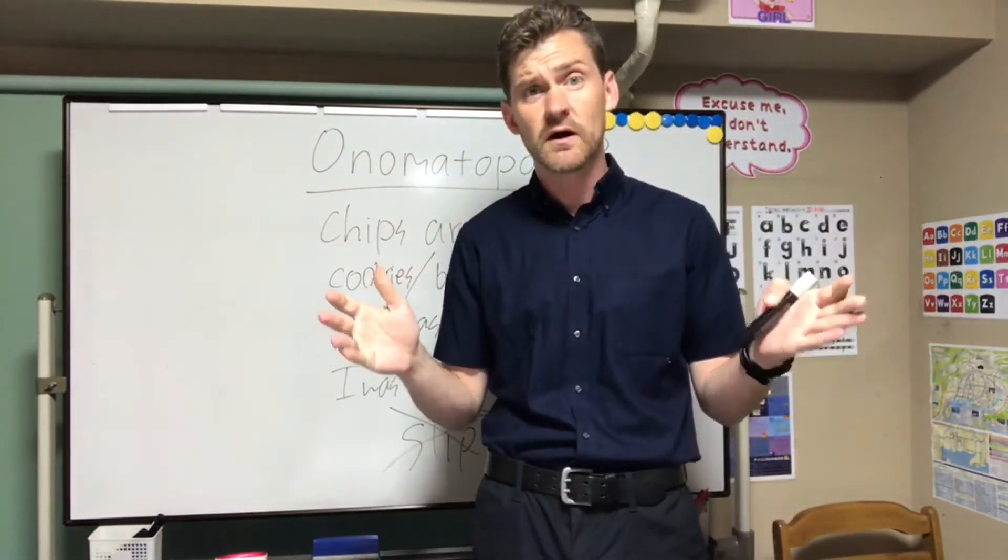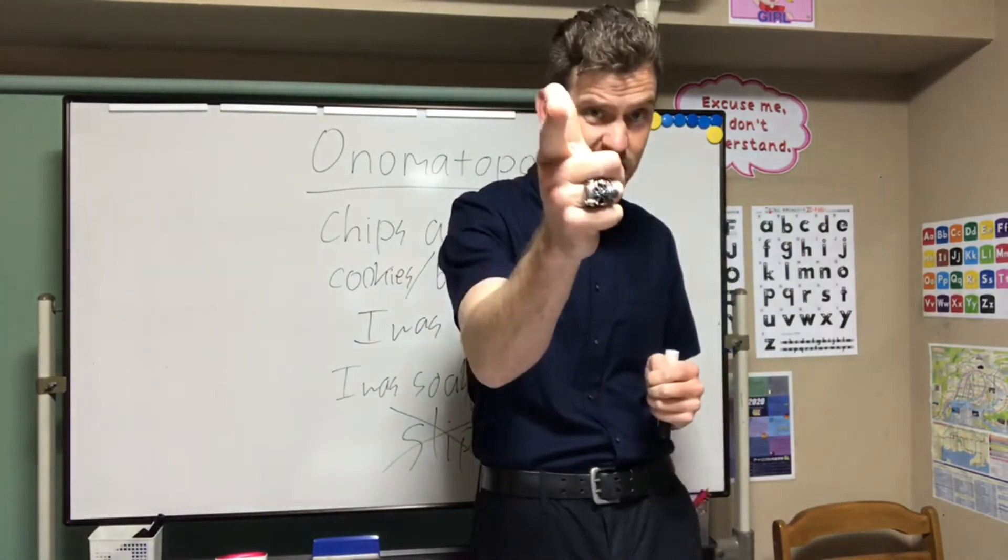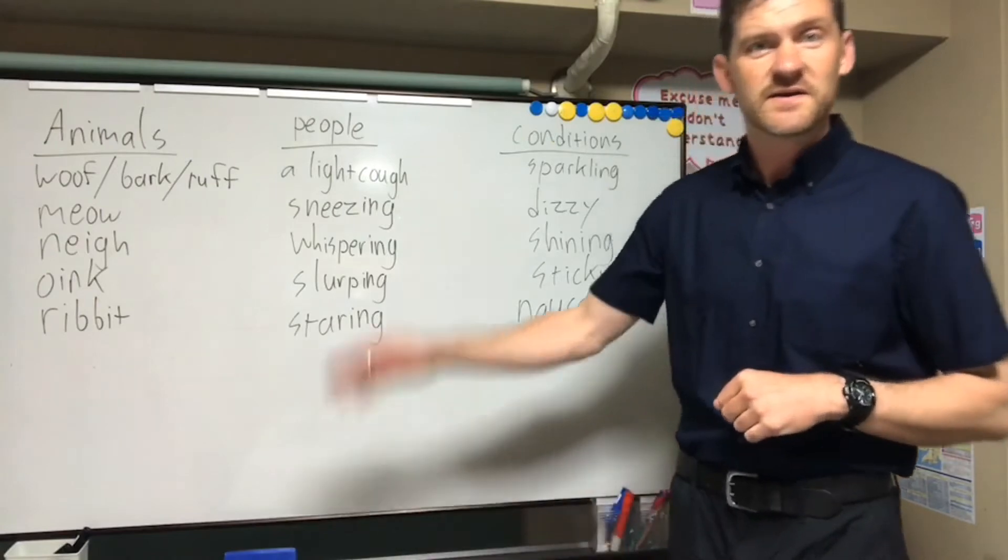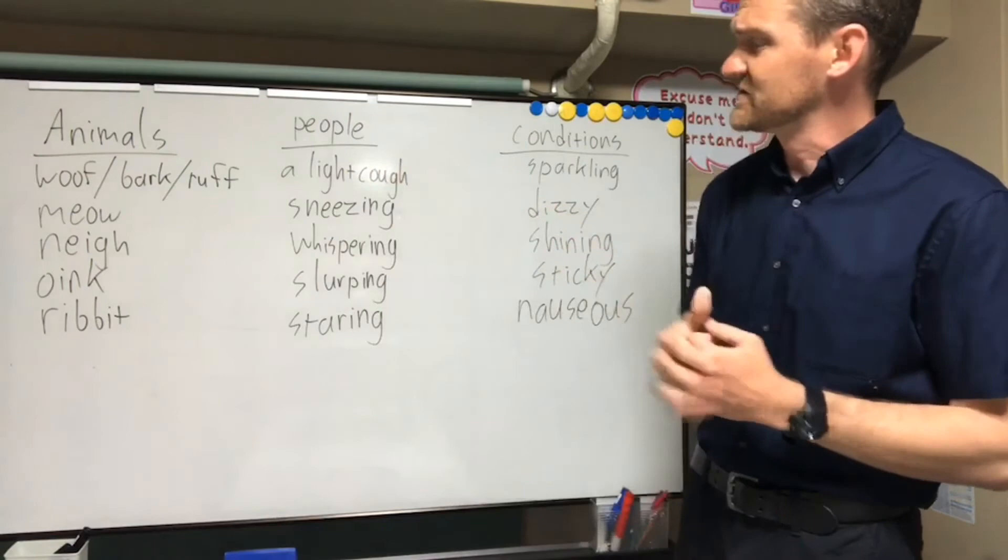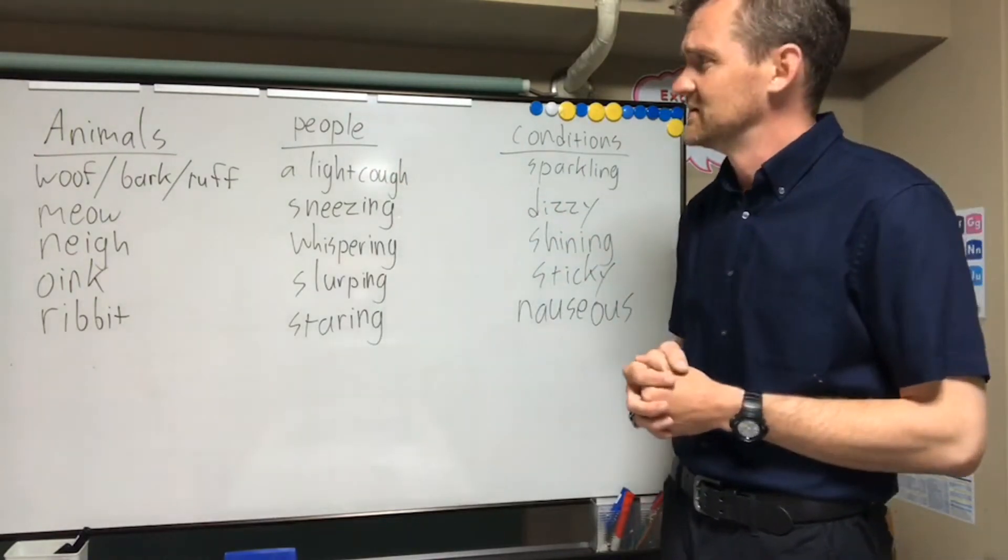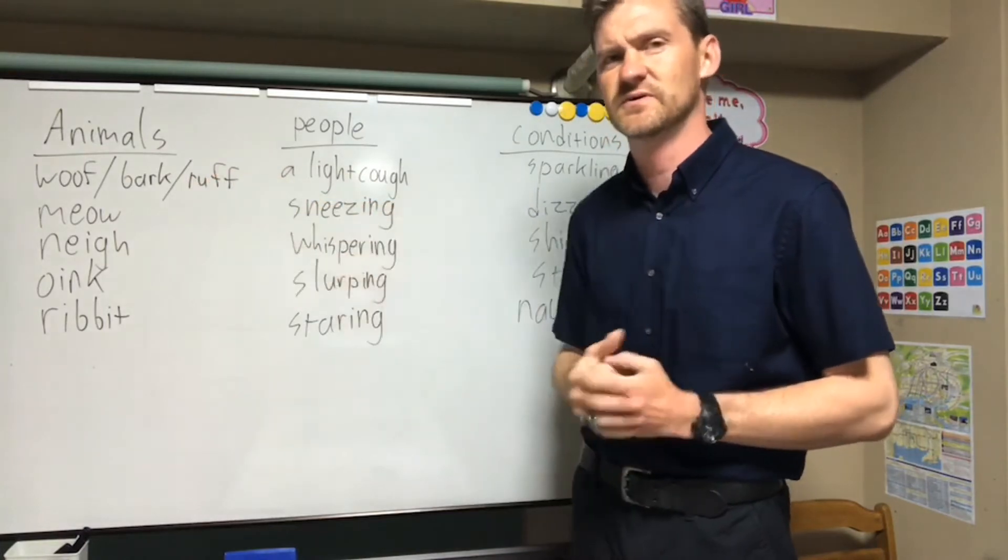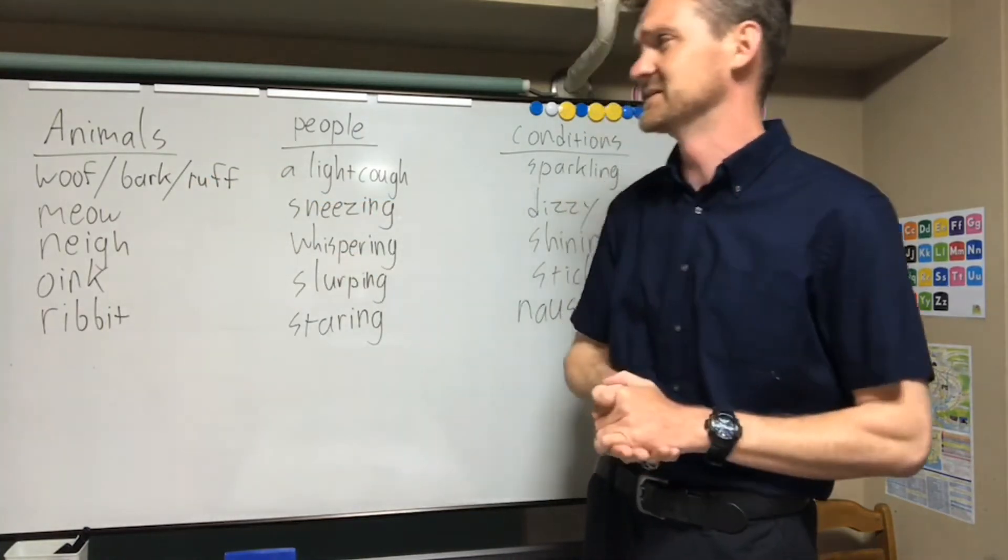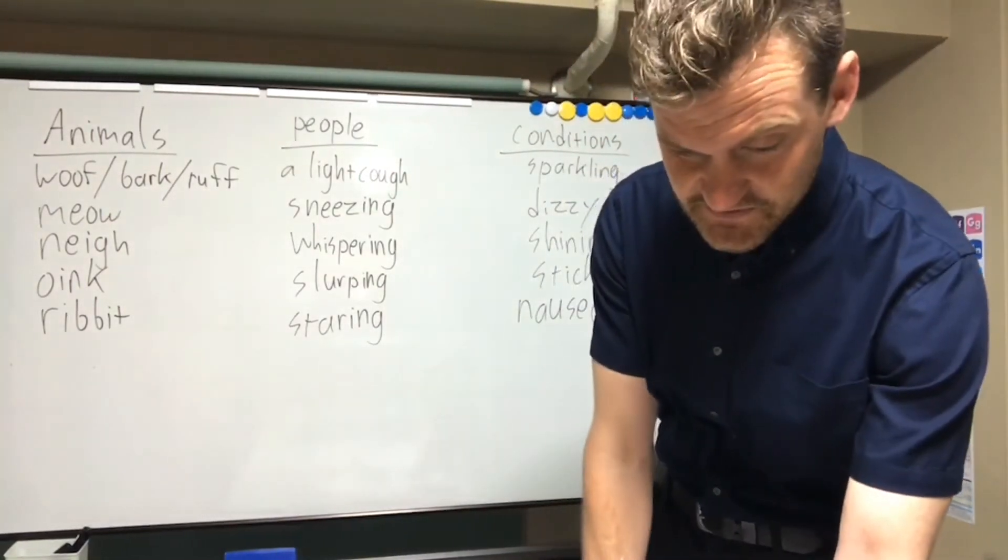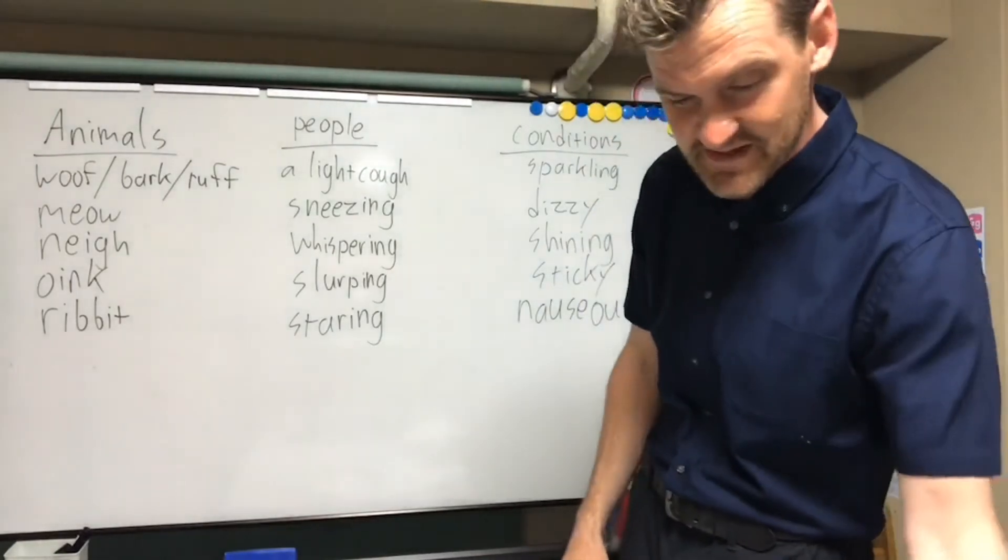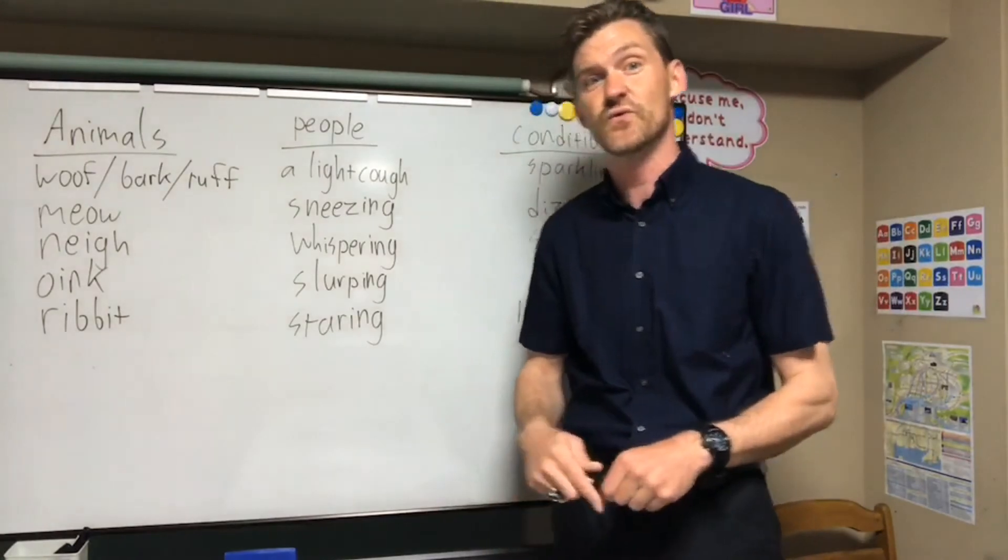There are a lot more onomatopoeias in English. So let's give those a check. Welcome back. So here I've added a few more of our giseigo. Animals. Let's test. What animal says woof woof, bark bark, ruff ruff? It's a dog. Very good. So Japanese wan wan. It's a little more difficult to do it in Japanese to English. A lot of the sounds are completely different for animals.